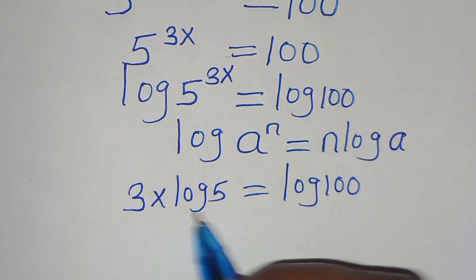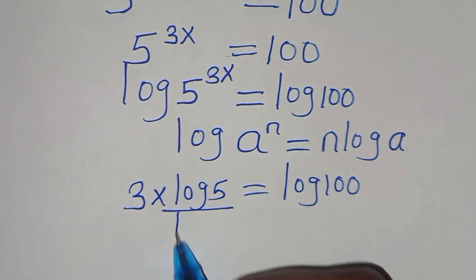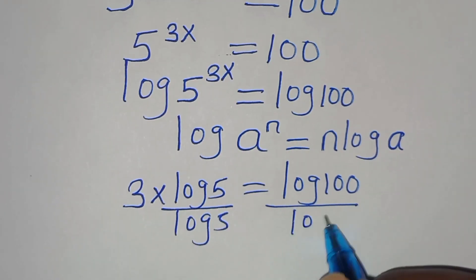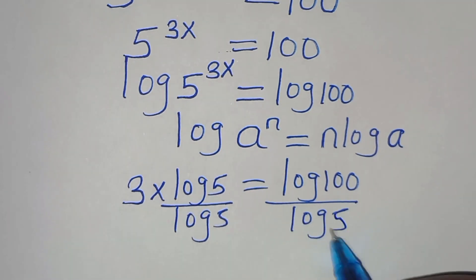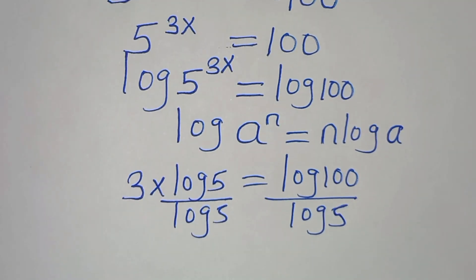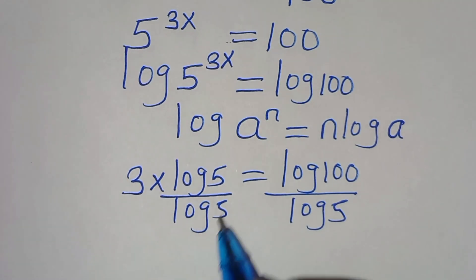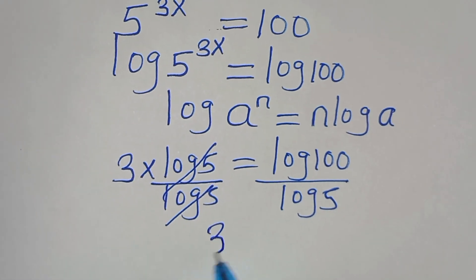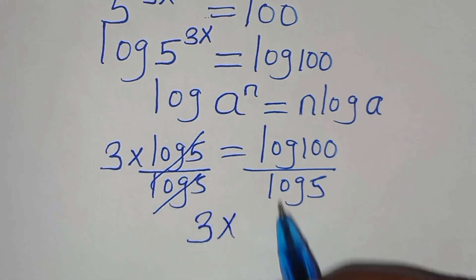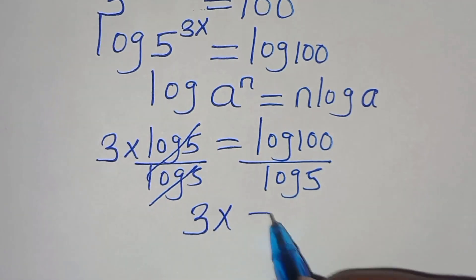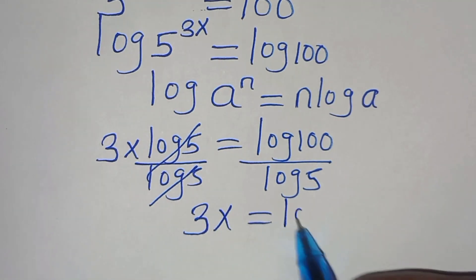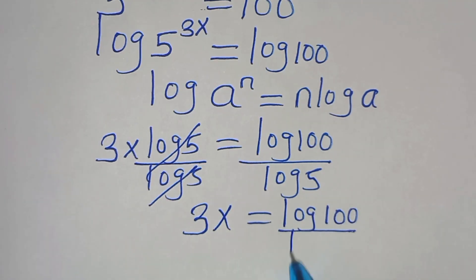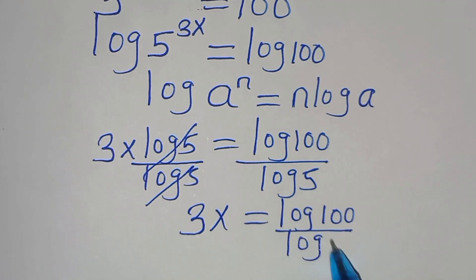Let's divide both sides by log 5. Log 5 and log 5 simplify, so that we have 3x, this is equal to log 100 divided by log 5.